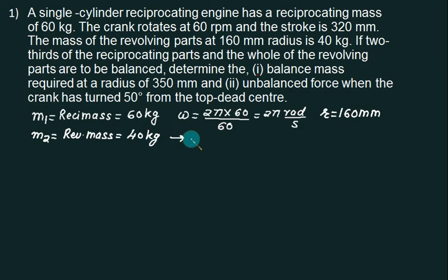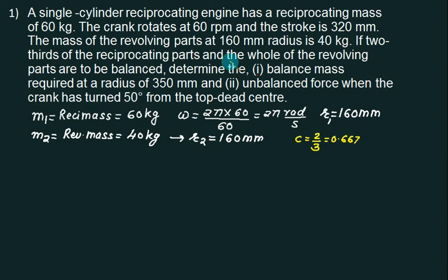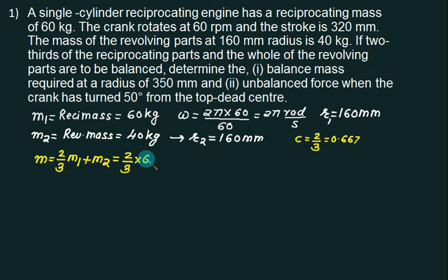The radius for the reciprocating mass is R1 and for the revolving mass is R2, both equal to 160 mm — the crank radius. Two-thirds of the reciprocating parts are to be balanced, so C = 2/3 = 0.667, and the whole of the revolving parts are to be balanced. The total mass to be balanced is 2/3 × M1 + M2 = 2/3 × 60 + 40 = 80 kg.